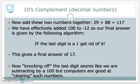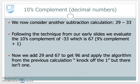Now, knocking off the last digit might seem like subtraction. But computers are very good at clearing out bits when they've been set — so this is a clearing out and knocking off; it is not a subtraction.